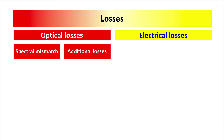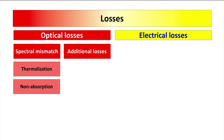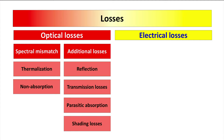Under spectral mismatch losses, we mean thermalization and non-absorption losses of energy of photons that propagate through the absorber of a solar cell. Additional optical losses include reflection and transmission losses, parasitic absorption in supporting layers of a solar cell, and shading losses caused by front electrodes.